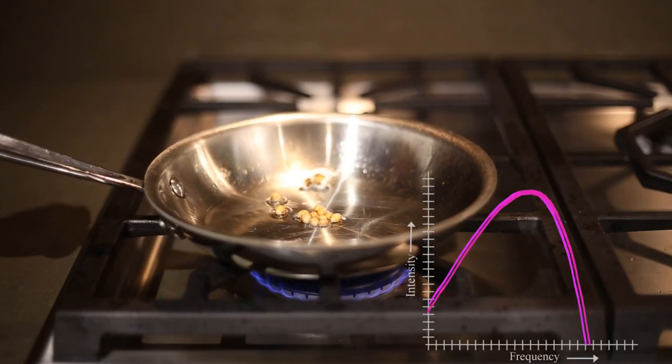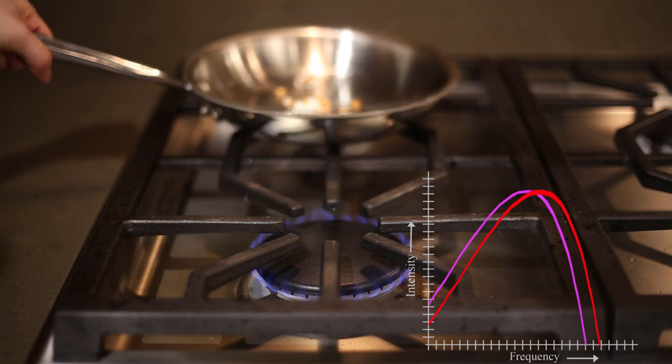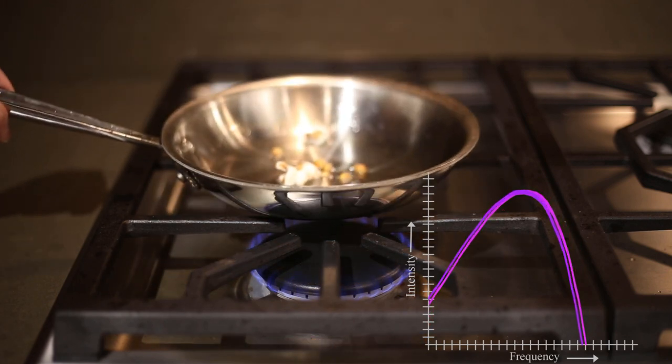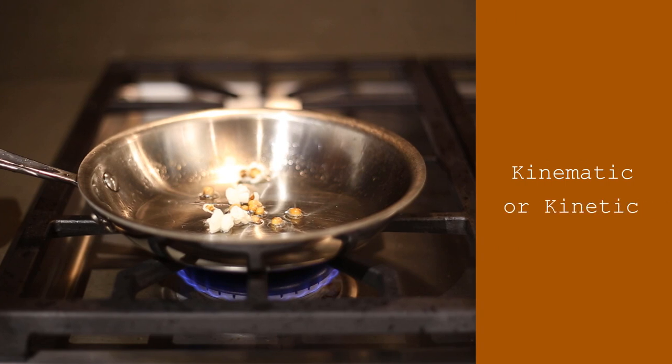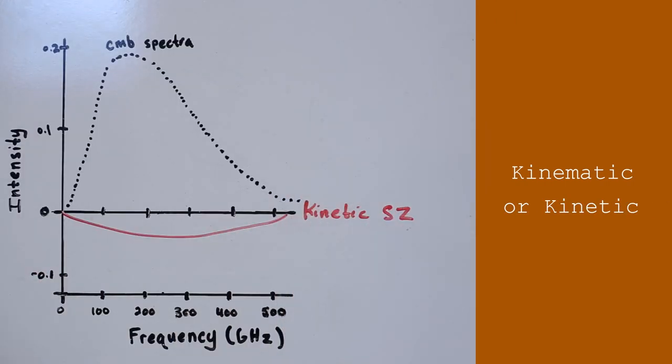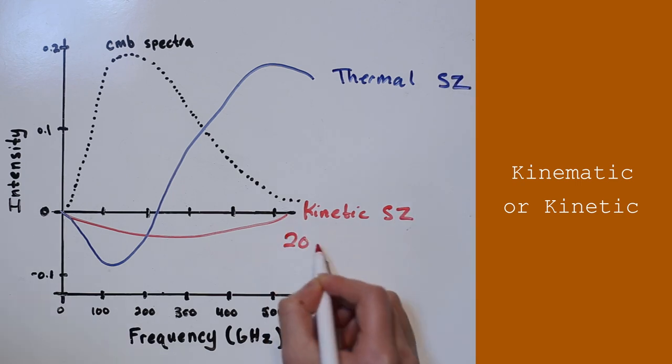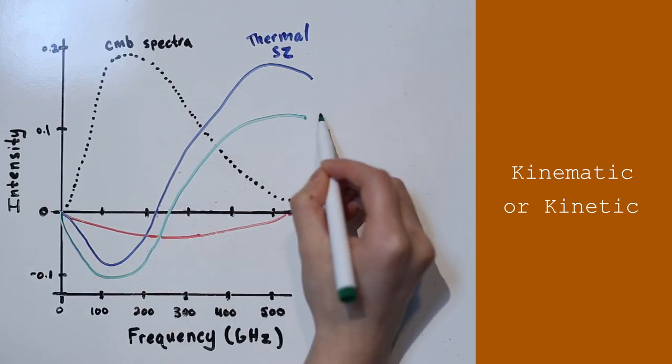But this isn't the only shift that's observed. If the galaxy happens to be moving towards or away from us, the photons are Doppler shifted while they're being scattered. This is called kinematic, or kinetic S-Z, which causes a separate frequency shift, but one that can be 20 times fainter than the thermal S-Z, and still stack with it.